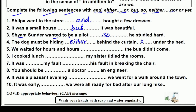The dog must be hiding either behind the curtain or under the bed. Next: 'We waited for hours and hours __ the bus didn't come.' Here 'but' or 'yet' fits — 'we waited for hours and hours, yet the bus didn't come.' We were waiting for hours but the bus still didn't come, so 'yet' works here.